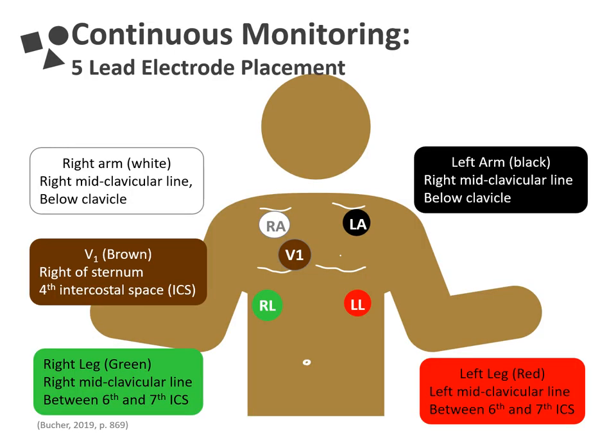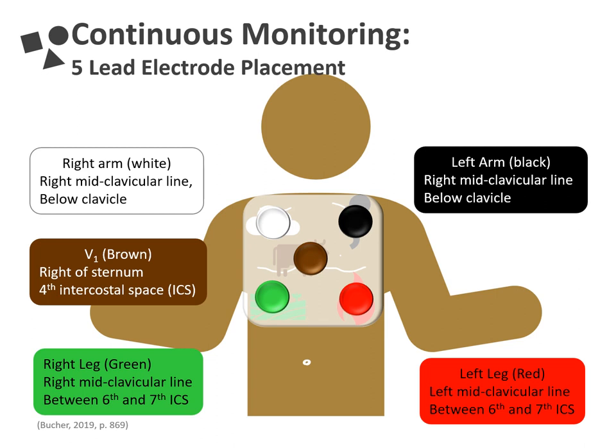A 5-lead EKG is commonly used for continuous monitoring at the bedside. Anatomical landmarks for electrode placement are written on this slide, but there are a few tricks that healthcare providers can use to remember where each electrode goes. There are standard colors for each electrode wire: white rhymes with right, so the white electrode goes on the right shoulder — we can imagine it as a cloud in the sky. The black electrode is imagined as a puff of smoke that goes over the red electrode, the fire. The green electrode goes under the white cloud and represents the green fields. And finally, the brown electrode is a cow standing in that field. You may have also noticed that this placement looks a lot like the number five on a dice, which is another trick to help you with placement.